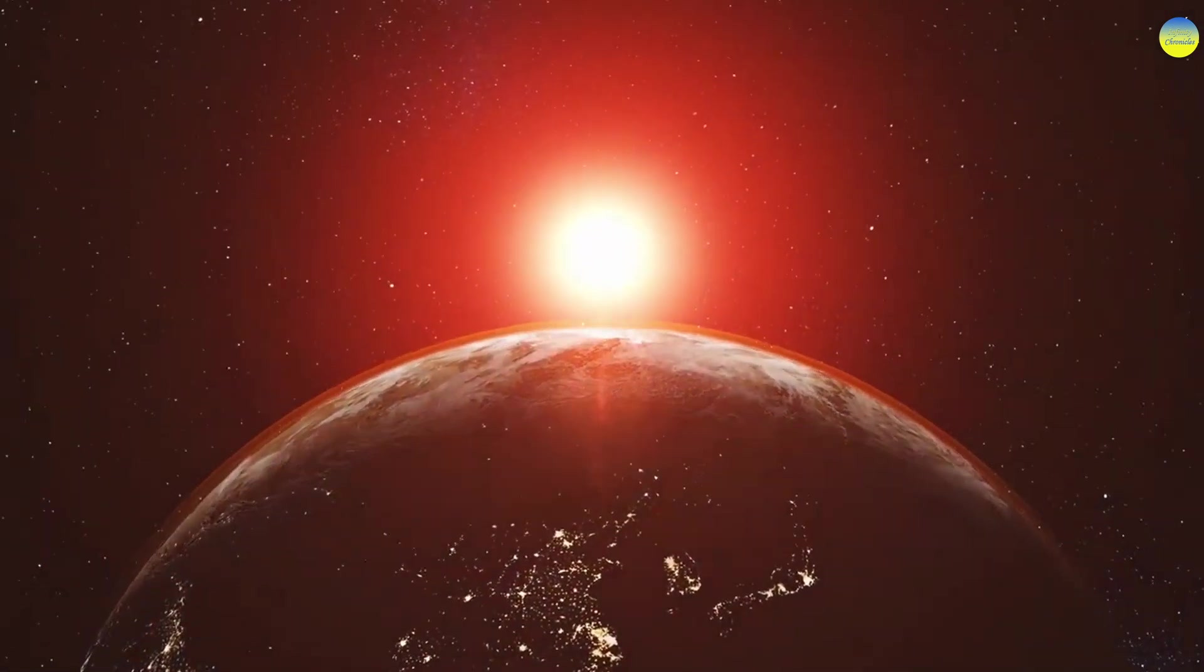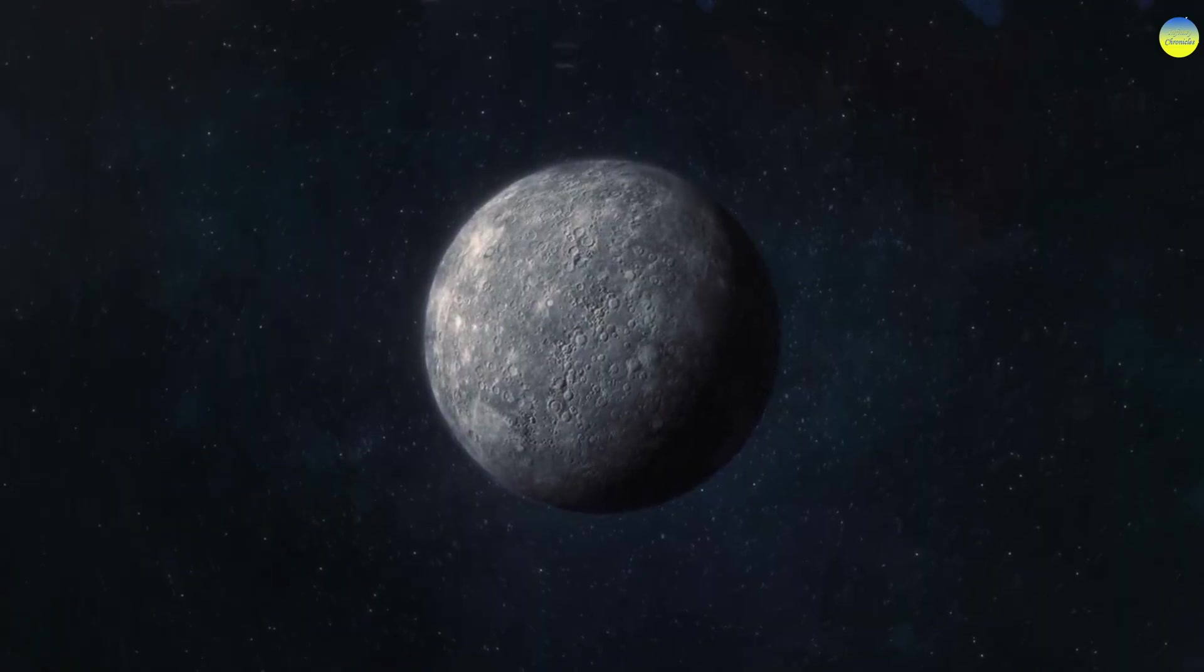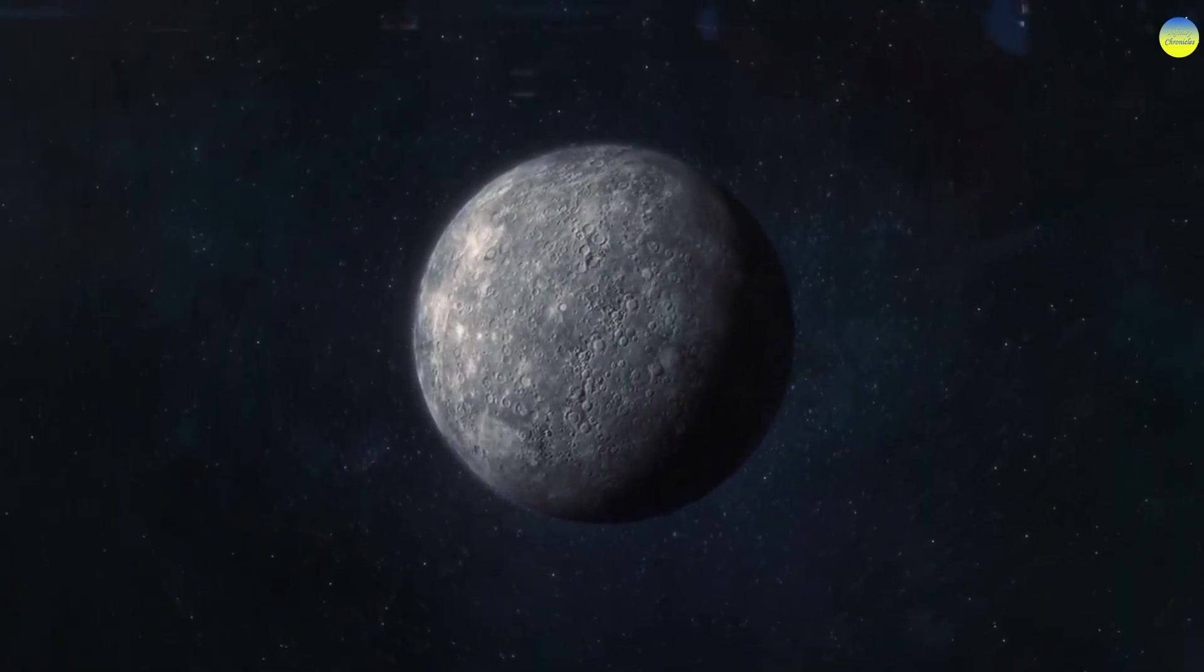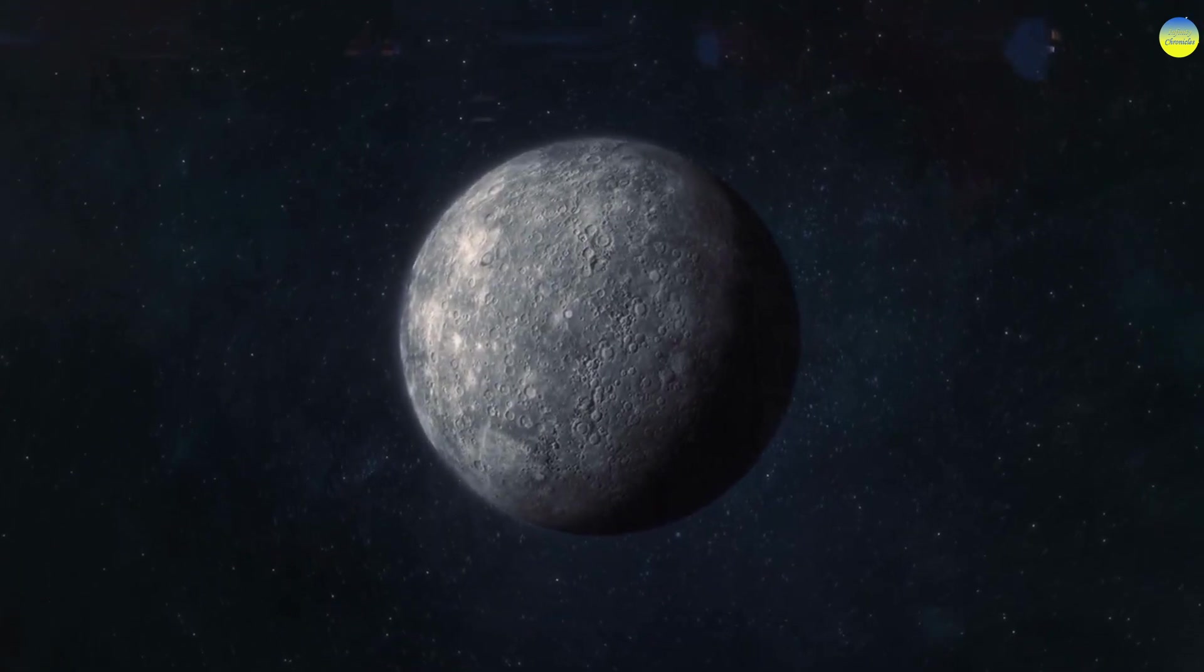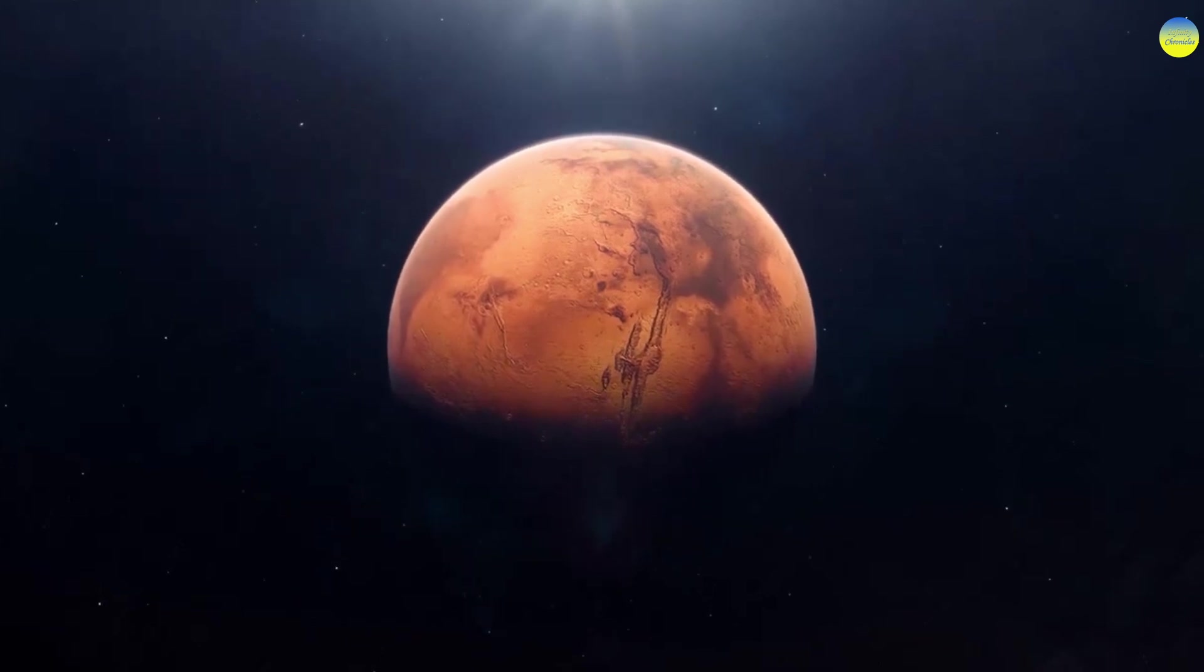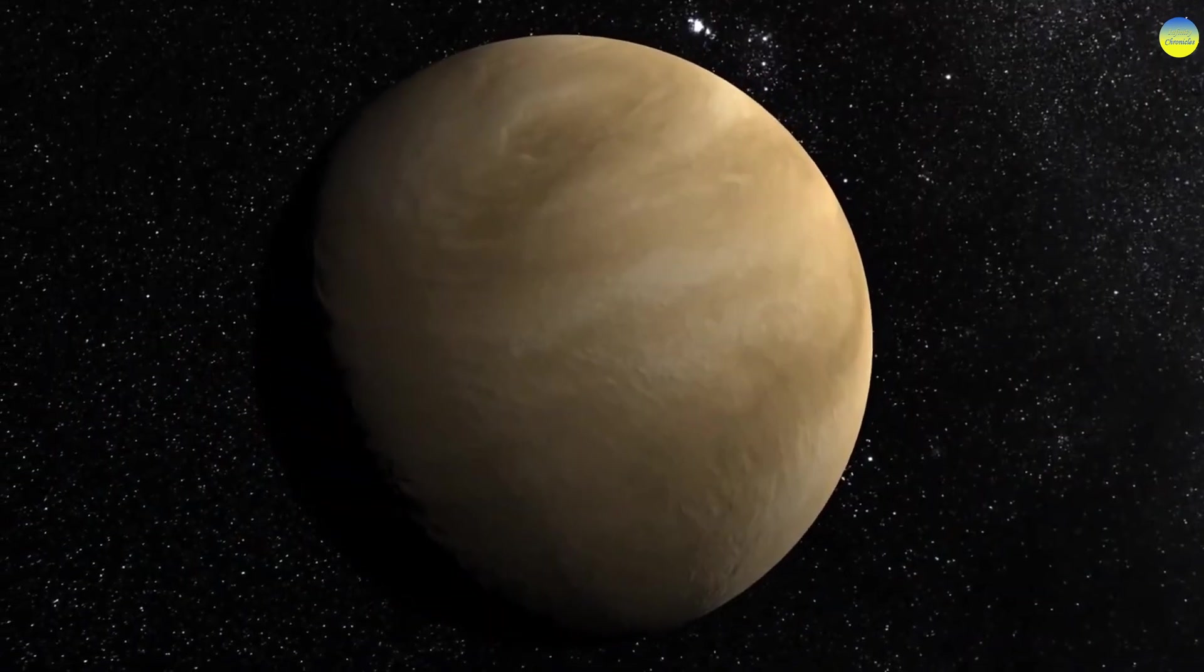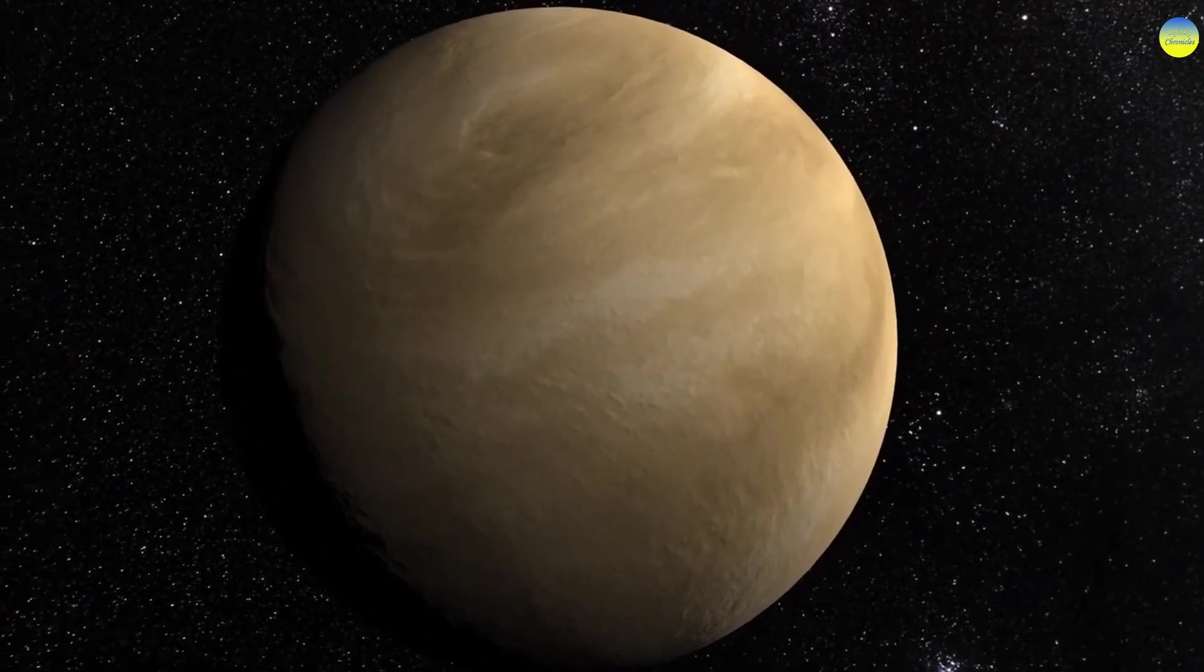If counter-Earth existed, for example, during the confrontation of planets with point L3, they would deviate from their normal orbits. This would be especially noticeable from Mars and Venus. The orbit of Mars would approach the sun, and Venus, on the contrary, would be pulled away from it.